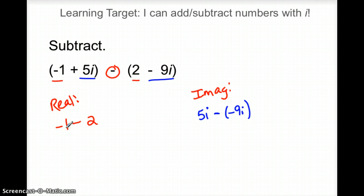So negative 1 and you take away 2 more. Well, now you're in the hole 3, so negative 3. But now, over here in the imaginary part, when you have minus a negative, that's the same as plus a positive. So I'm really doing 5i plus 9i, so we're going to bump up to 14i.